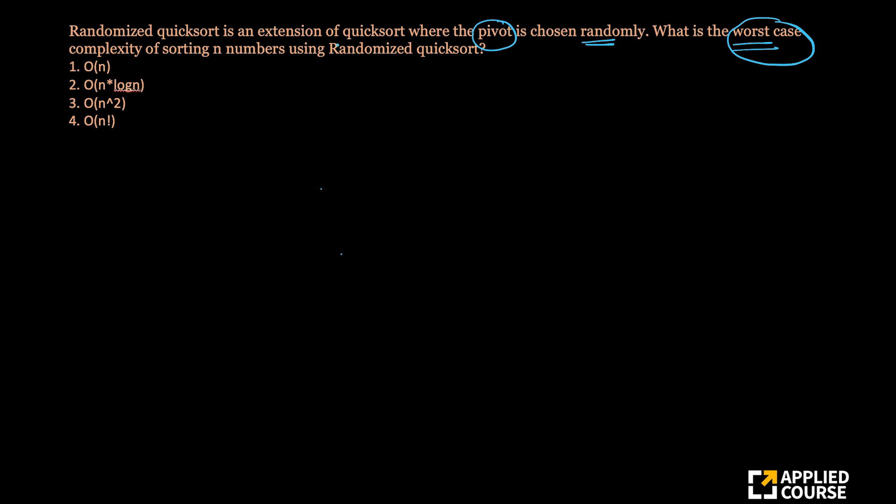It's a very good question. The keyword here is the worst case. It's very important. Imagine if my array consists of the same numbers, let's say 3, 3, if my array consists of the same number repeated itself, which means all the elements are the same, then what happens to randomized quicksort?